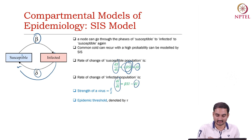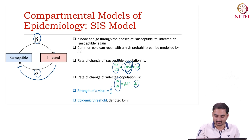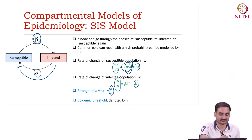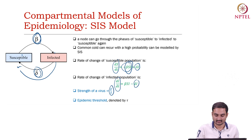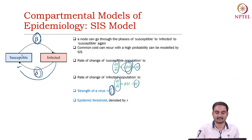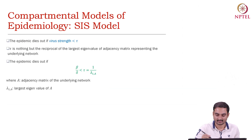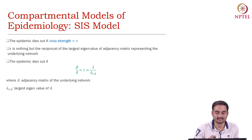Here we define a quantity called the strength of a virus. The strength of a virus is beta divided by delta — the infection rate divided by the recovery rate. For every epidemic, we essentially measure this beta-by-delta ratio.